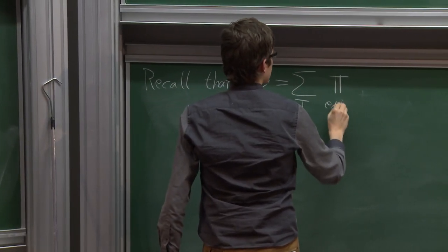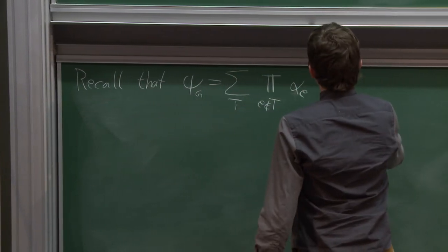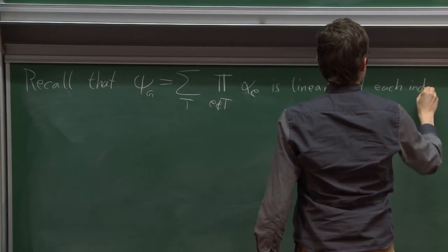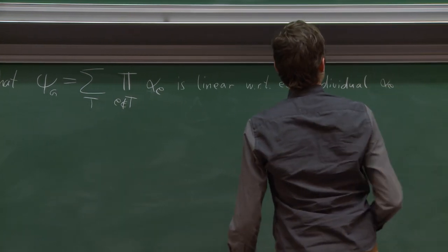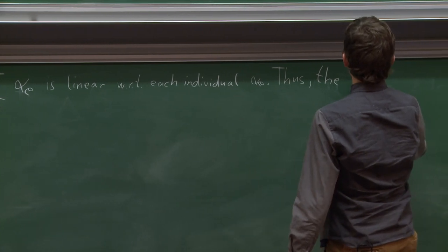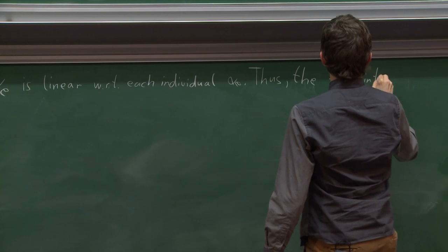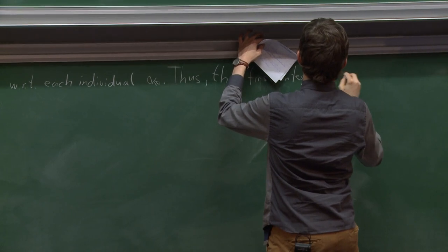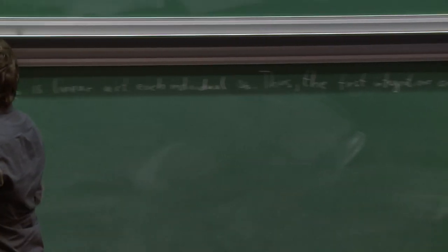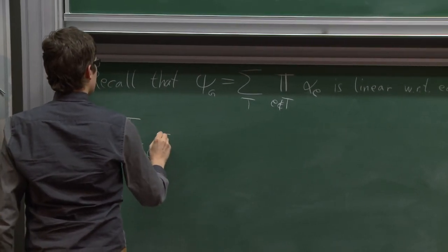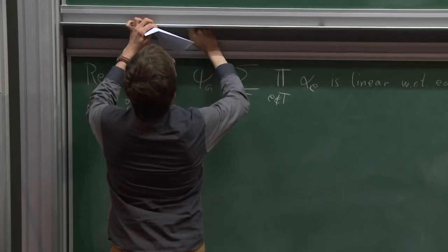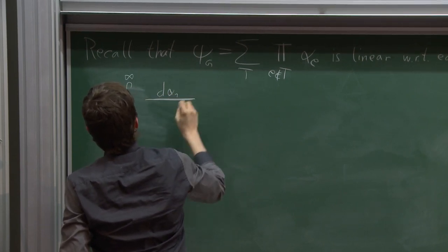Recall that by definition, the Symanzik polynomial psi_G is the sum over all spanning trees, where each spanning tree contributes a monomial which is the product of all edges not in the spanning tree. In particular, psi_G is linear with respect to each individual variable. This means that the first integrations are essentially elementary.